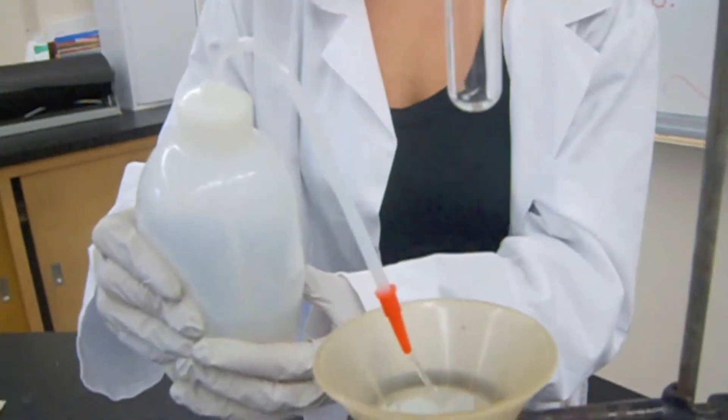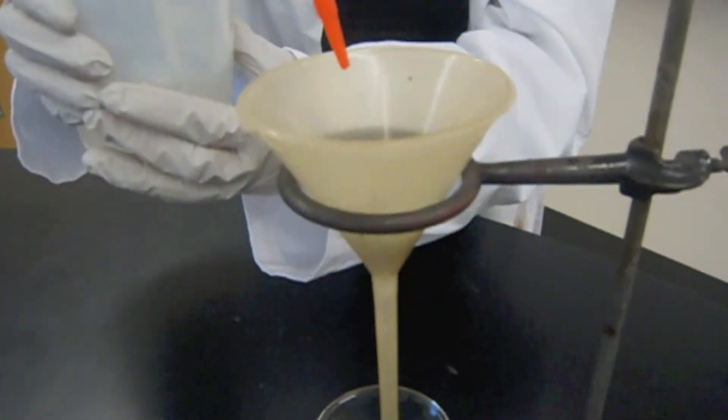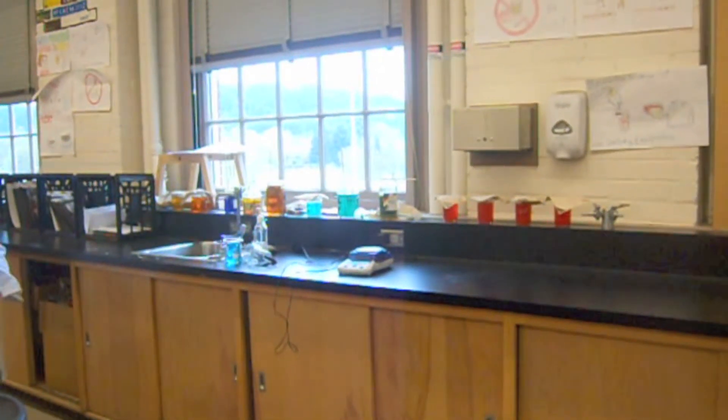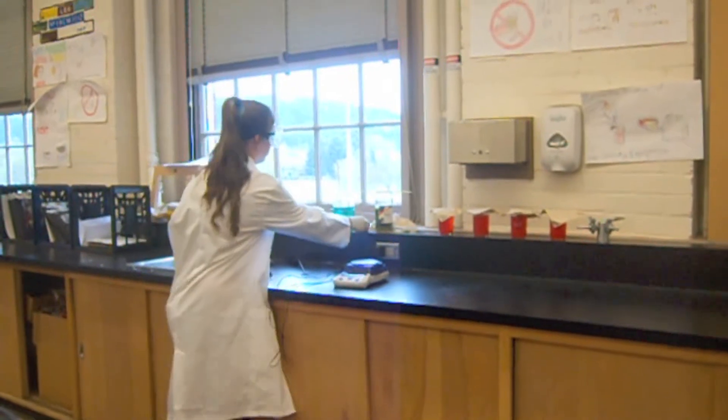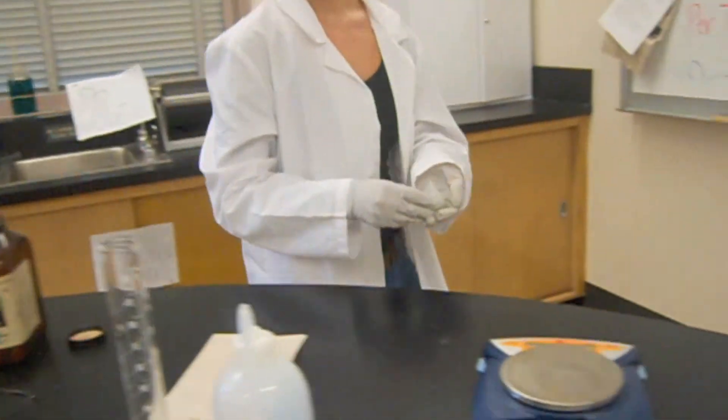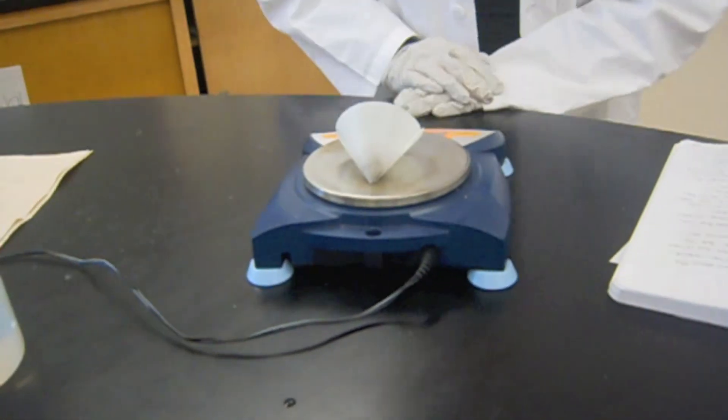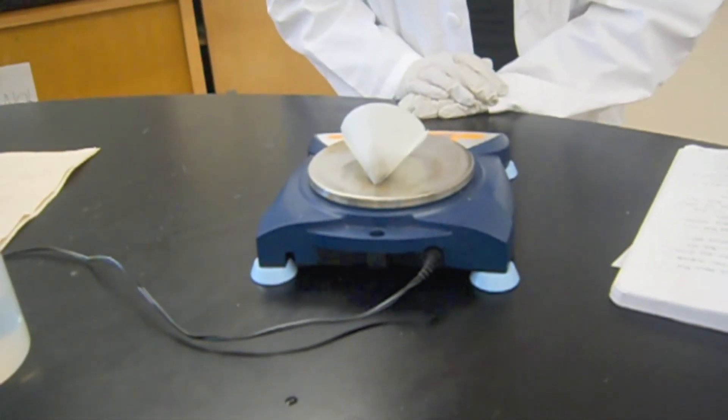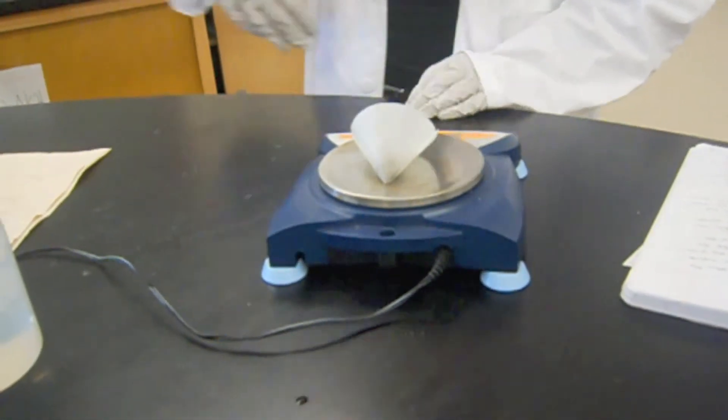Rinse the silver and the filter paper with distilled water. When everything is dry, weigh both the copper and silver. Record all results in the data table.